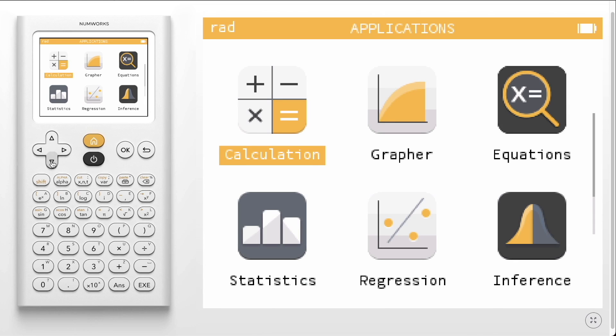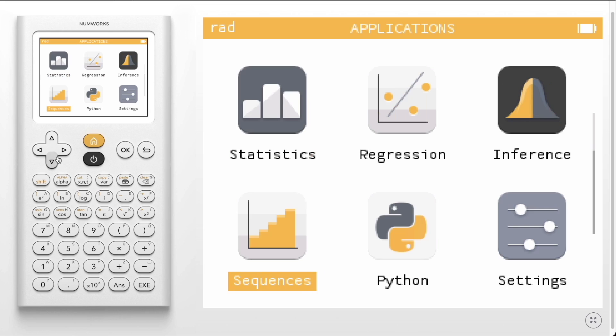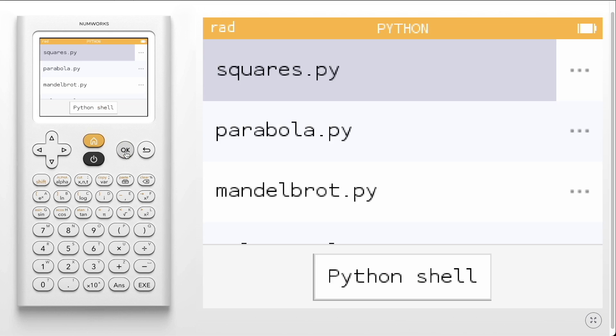Today we are going to learn how to edit and run a Python script on the NumWorks graphing calculator. To begin, enter the Python application.